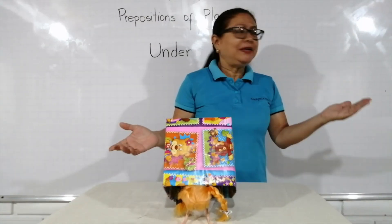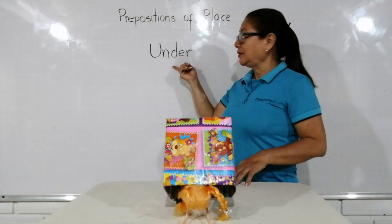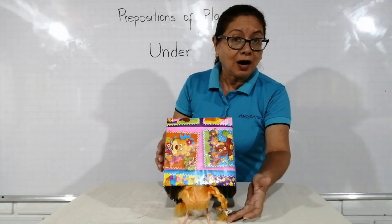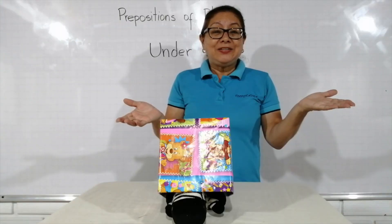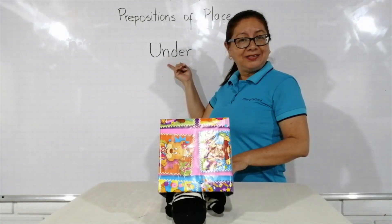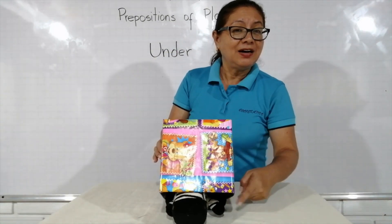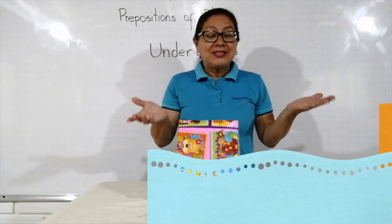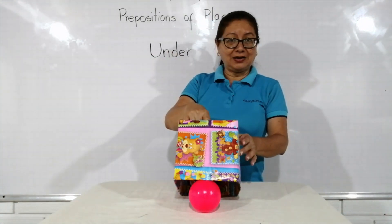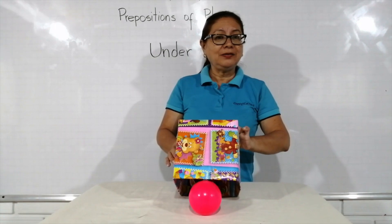Where is my doll? Look — under. The doll is under the box. Where is the zebra? Repeat: under. Under the box. The zebra is under the box. Where is the ball? The ball is under the box.